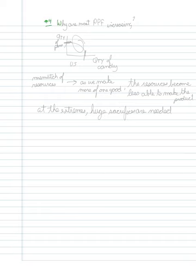Number four deals with the issue of why most production possibility frontiers are increasing. In other words, why do most production possibility frontiers look like this?